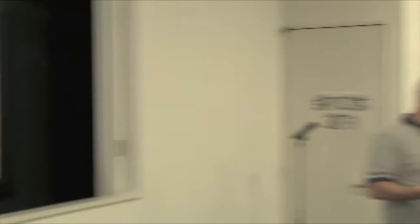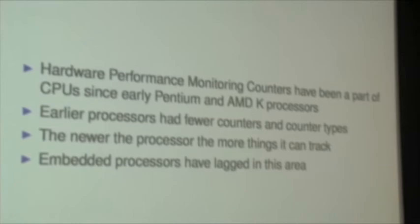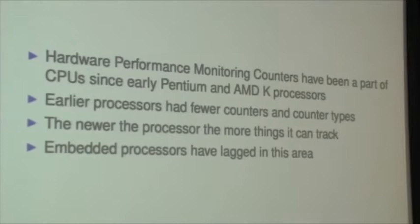This system we call HWPMC, which is a device driver in a set of programs, has been part of CPUs since Pentium and the AMD K processors. As the number of transistors on the die has increased, you could count more things — there are more things you can count. The newer the processor, the more things it can track.